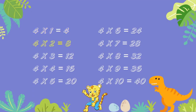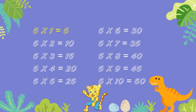4 ones are 4. 4 twos are 8. 4 threes are 12. 4 fours are 16. 4 fives are 20. 4 sixes are 24. 4 sevens are 28. 4 eights are 32. 4 nines are 36. 4 tens are 40.